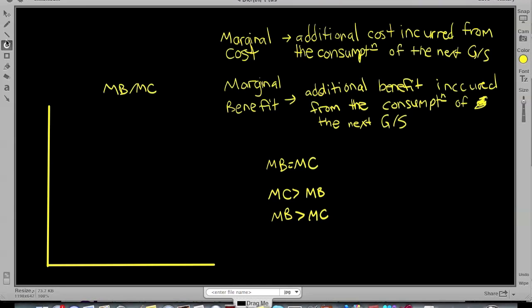So first I'm going to label my axes: dollar sign and quantity. And we are going to do marginal benefit and we are going to do marginal cost, which is upward sloping.